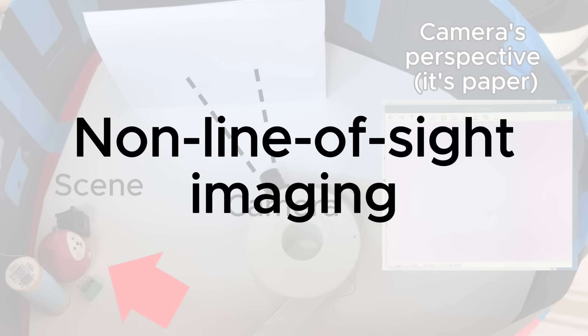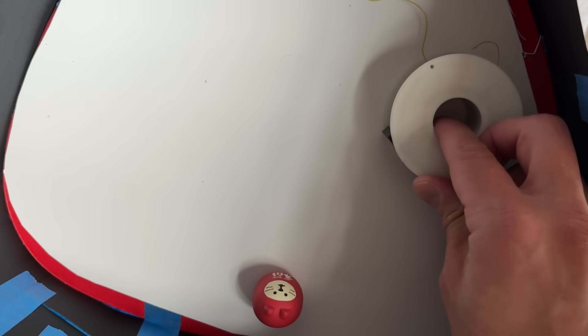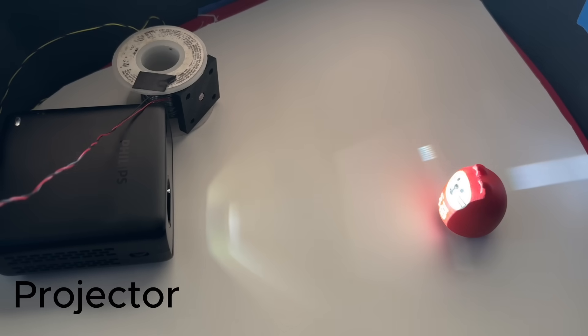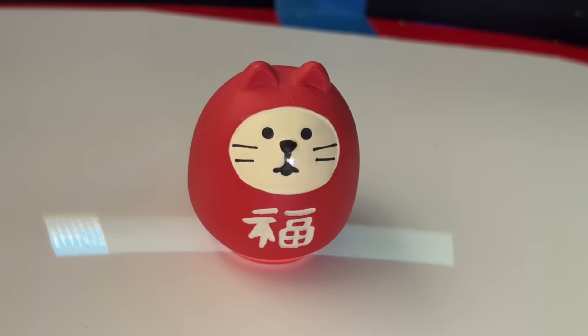We need to start with a simpler task first, creating an image with a single photo detector facing the scene. Using a projector, we can illuminate the scene one point at a time, detect the reflected light, and rearrange the measurements into a 2D image.